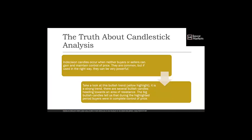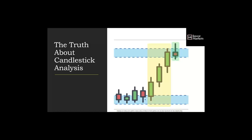An indecision candle occurs when neither buyers nor sellers can gain and maintain control of price. They are common, but if used in the right way they can be very powerful. Take a look at a bullish trend — bulls in control, moving up. We could have five or seven candles, even a mix with one red candle in between, but price is continuously pushing up. These indecision candles appear all the time, all over your charts — they don't mean much by themselves.